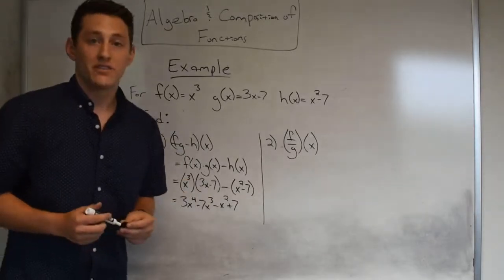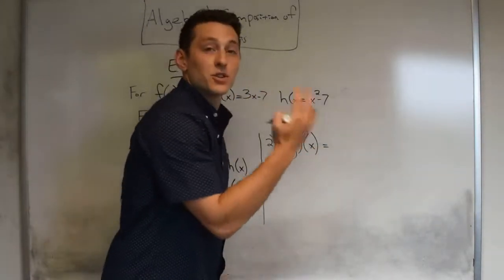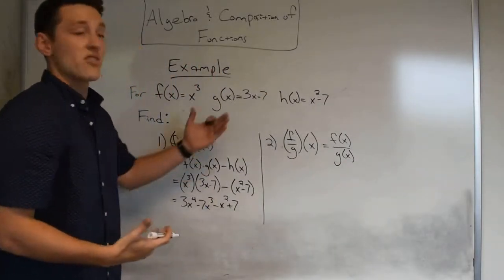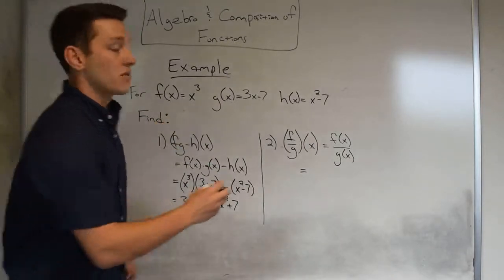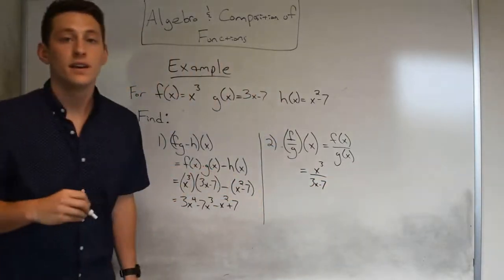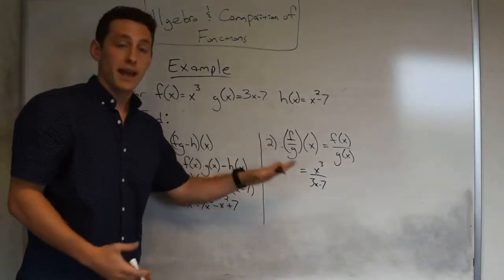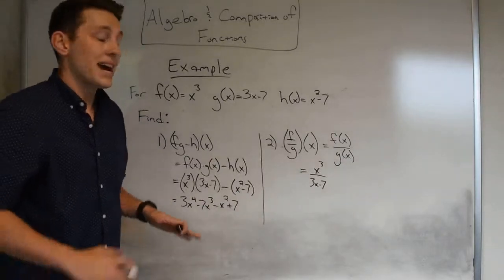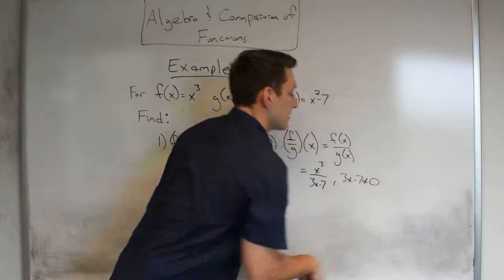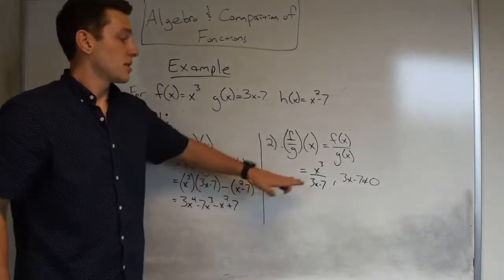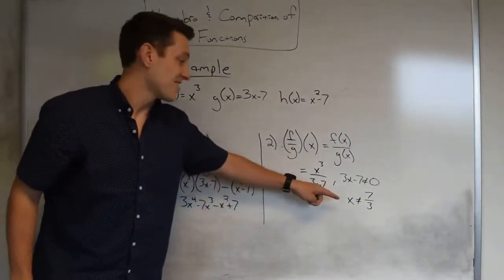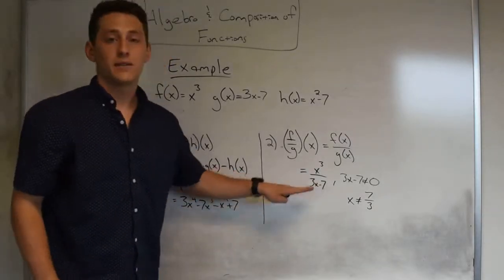For (f / g)(x), translating gives f(x) divided by g(x), which is x cubed over (3x minus 7). An important note about the domain: we can't include the x-value that makes the denominator zero. Solving 3x − 7 = 0, we get x = 7/3. So the domain is all x not equal to seven-thirds, since that would make the bottom equal zero.